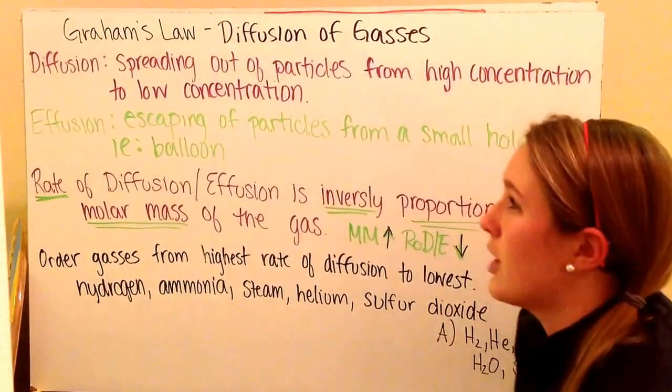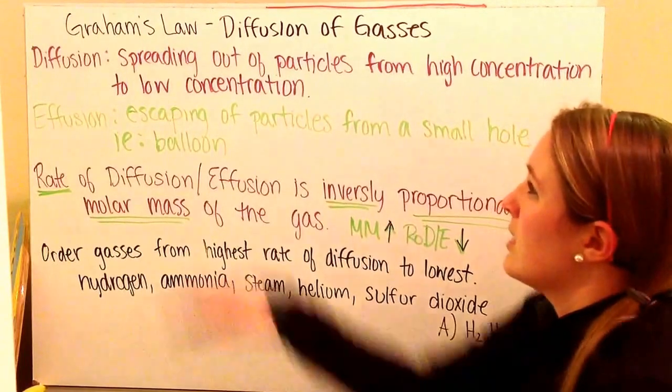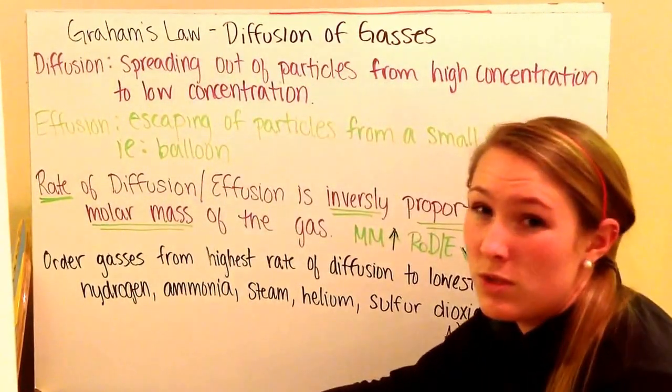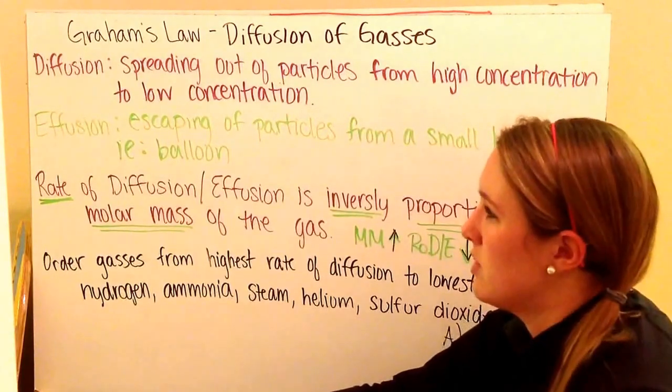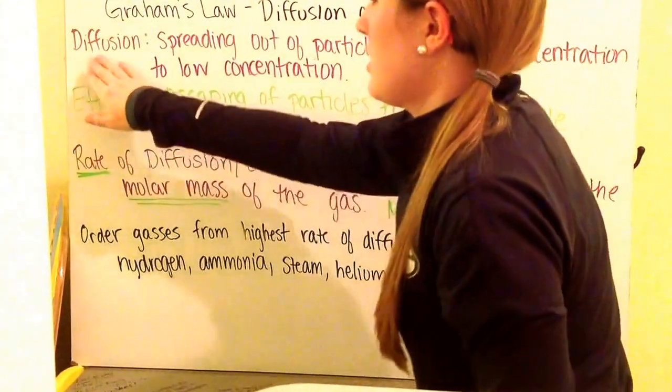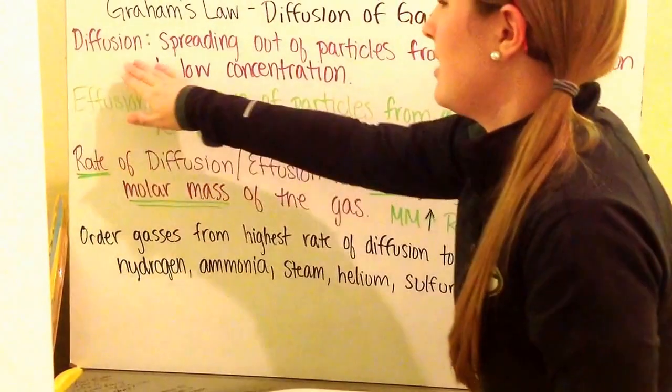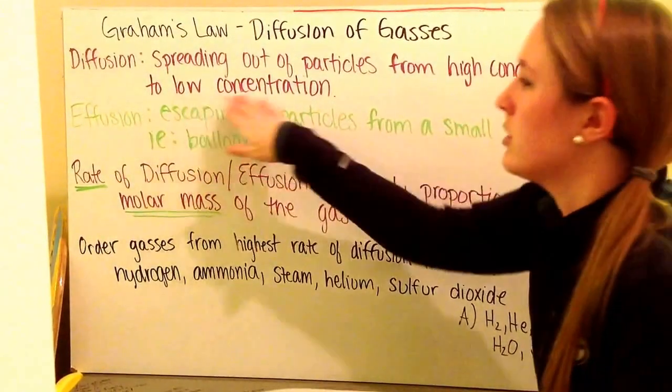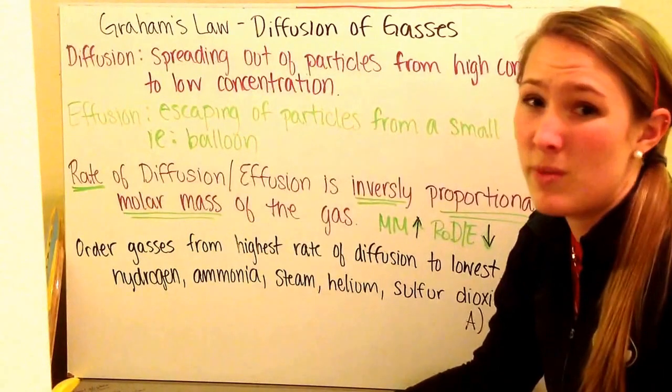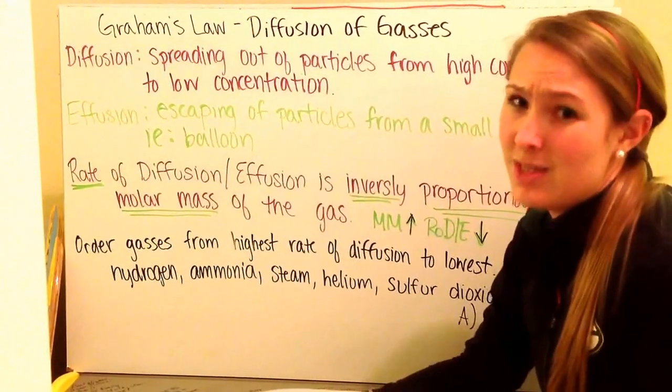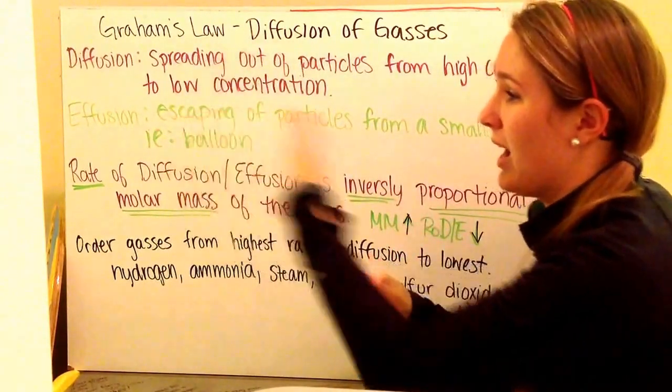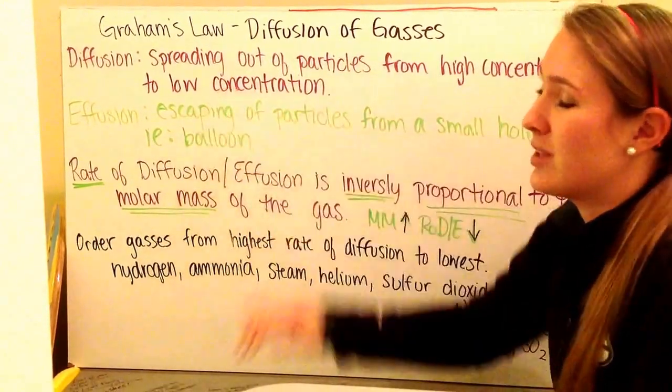The next law that we're going to talk about is Graham's Law. It's Graham's Law of diffusion of gases. We need to understand what diffusion is and what effusion is. Diffusion starts with a D. This is the spreading out of particles from high concentration to low concentration. So you've learned about diffusion in biology, or osmosis, where you have a concentration gradient and things always move from high to low. Same thing here with gases.